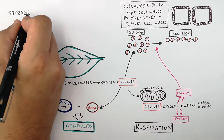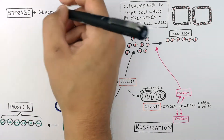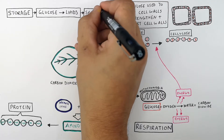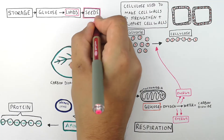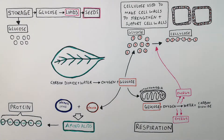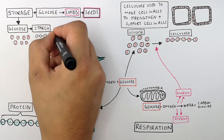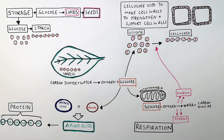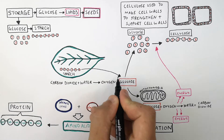Plants have energy stores, but glucose isn't stored as glucose. Glucose is converted into lipids, which are then stored in seeds — these lipids, also known as fats, are chemical energy stores of the plant. Glucose molecules are also converted into starch, where glucose monomers are bonded together to form the polymer starch. Starch is stored in different areas of the plant, and if there is a lack of nutrients, the starch can be broken down back into glucose and used in respiration.